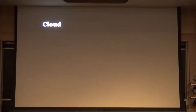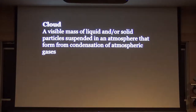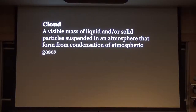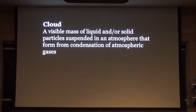Before we get started, I have a nomenclature slide because planets are confusing and words are confusing. When I say 'cloud,' I mean a visible mass of liquid or solid particles suspended in an atmosphere that form from condensation of atmospheric gases. On Earth, a cloud is obviously water that has condensed into ice or droplets. You can go back and forth across that phase change boundary relatively quickly, which tends to result in clouds being somewhat transient features with poorly defined boundaries.